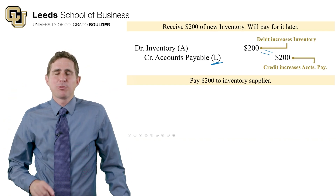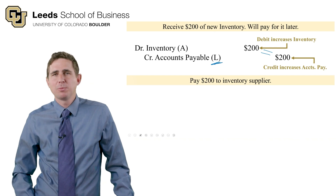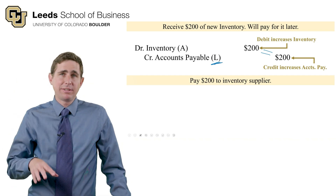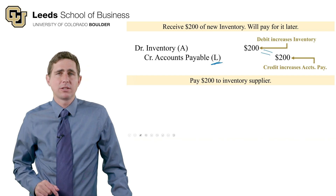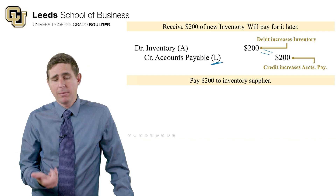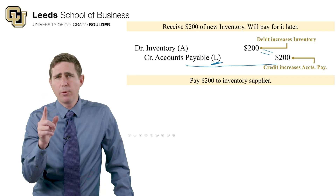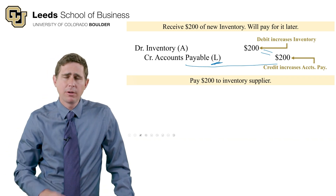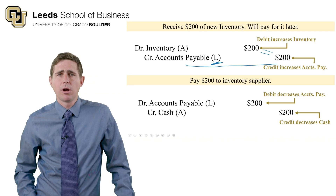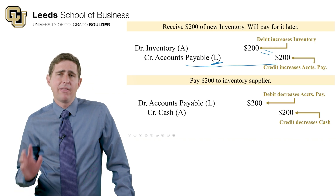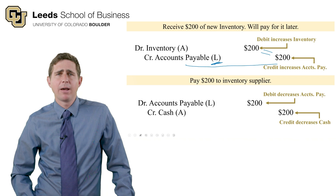Our next transaction: we're paying $200 to our inventory supplier, paying off that accounts payable. Accounts payable needs to go down, and cash also needs to go down. We made accounts payable go up with a credit, so it goes down with a debit — debit accounts payable to reduce it to zero. Cash is also going down; cash is an asset, so we decrease it with a credit.